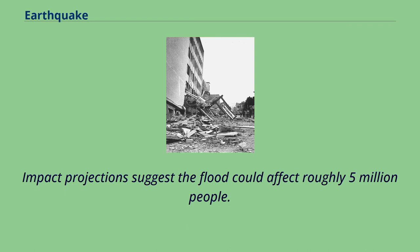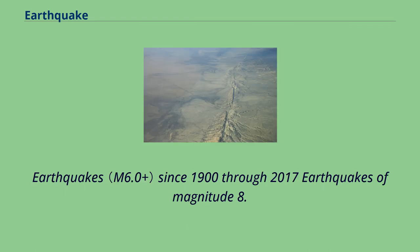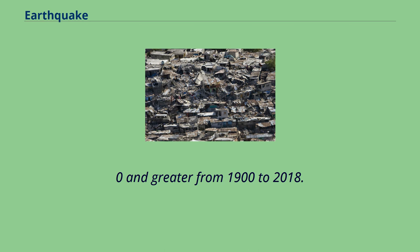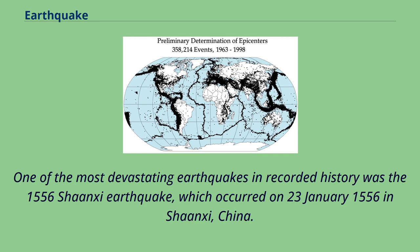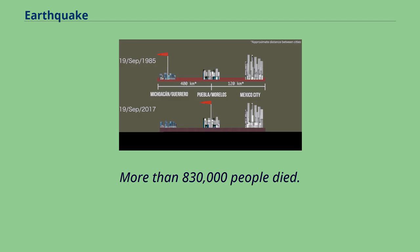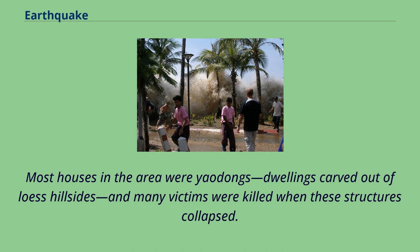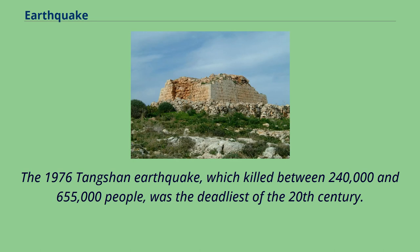Impact projections suggest the flood could affect roughly 5 million people. One of the most devastating earthquakes in recorded history was the 1556 Shaanxi earthquake, which occurred on January 23, 1556 in Shaanxi, China — more than 830,000 people died. Most houses in the area were yaodongs, dwellings carved out of loess hillsides, and many victims were killed when these structures collapsed. The 1976 Tangshan earthquake, which killed between 240,000 and 655,000 people, was the deadliest of the 20th century.